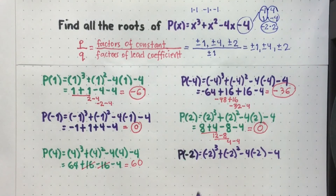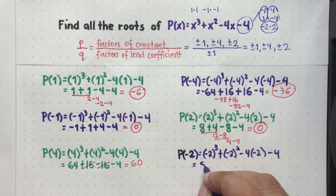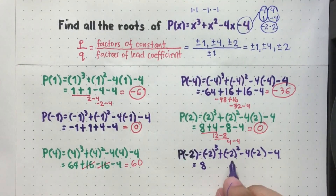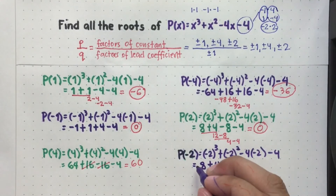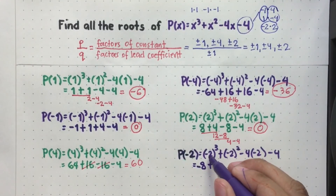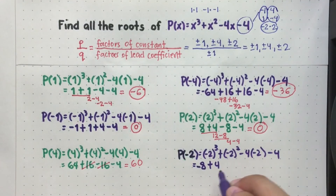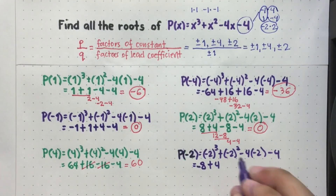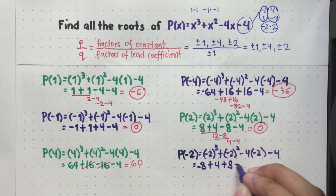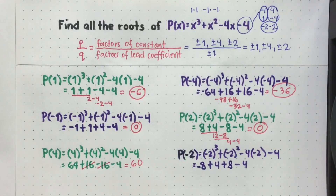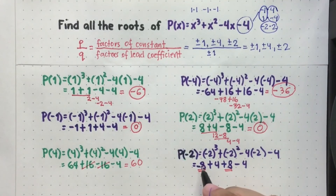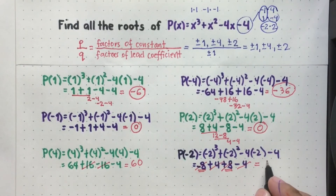Last one — P(-2): negative 2 cubed is negative 8. Then negative 2 squared is positive 4. Then negative 4 times negative 2 is positive 8. Copy negative 4. Solving: as you can see, may dalawang 8 na magkaiba ng sign — 0 na yan. Then 4 and negative 4 — magkaiba din ang sign, 0 na din. Wala nang matitira. So the answer is 0. P(-2) is also a root.